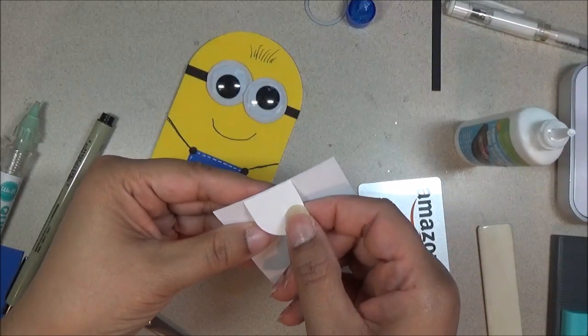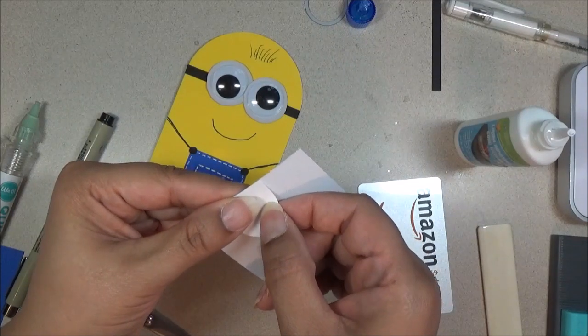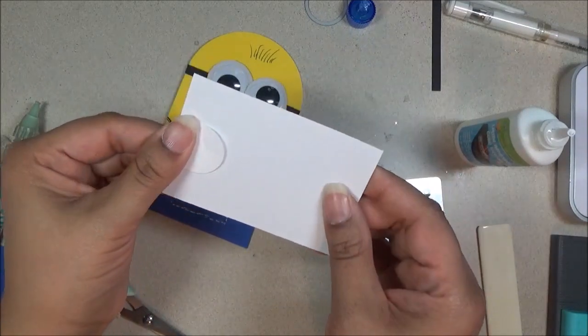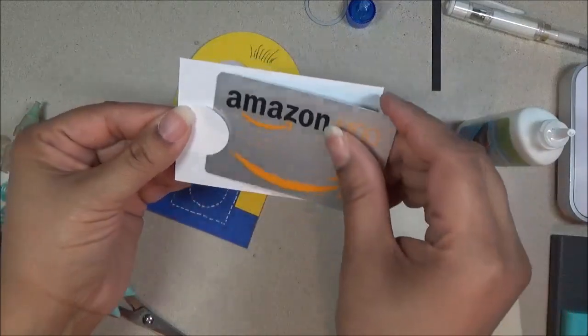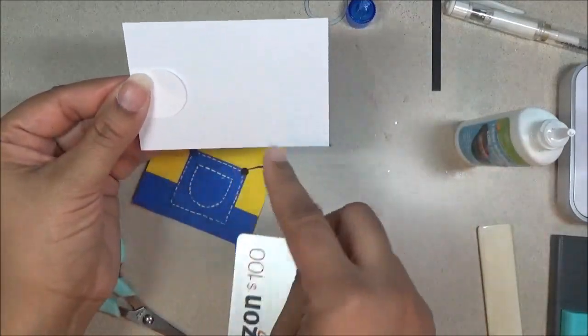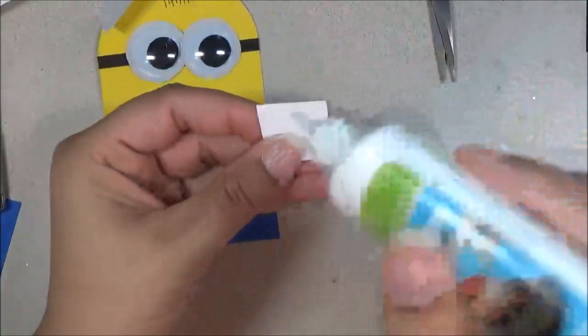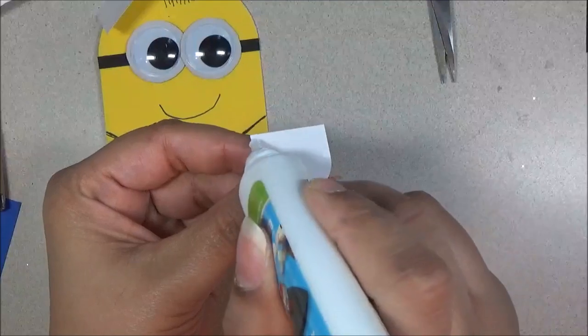And you can do it up and down or side by side. It's up to you. How you want the gift card to be in there. It could be like this or you can have it top and bottom. Okay, we're going to glue on the second little tab.